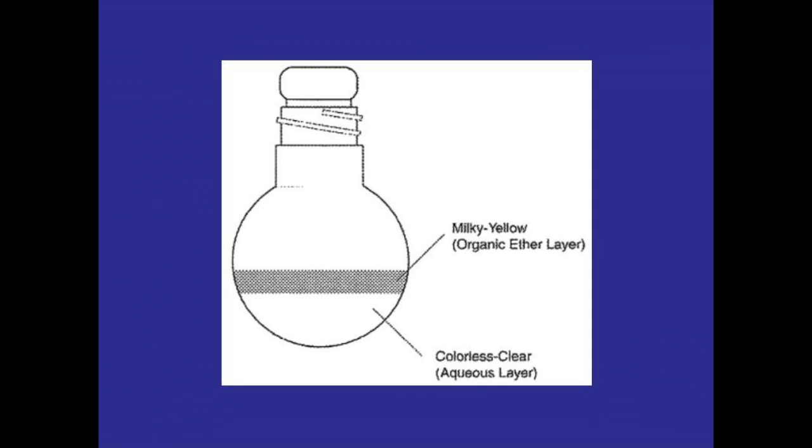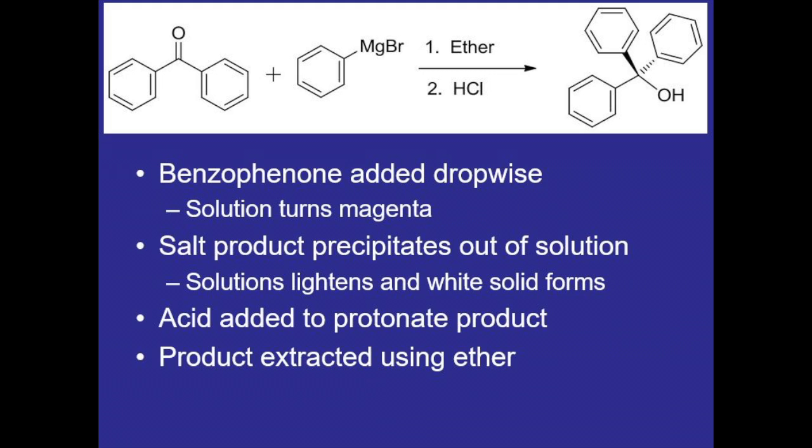The round bottom flask will end up looking like this, where the organic ether layer containing the product is on top and the aqueous layer on bottom. We'll remove the aqueous layer to a 5 milliliter conical vial and extract it three times with ether, then combine all of the extracts and dry them with sodium sulfate.